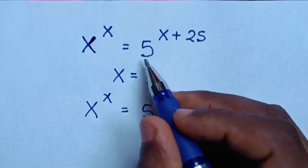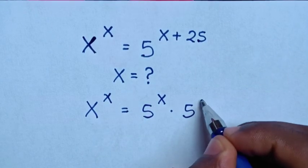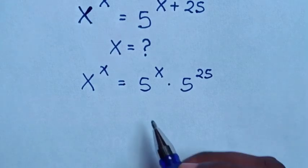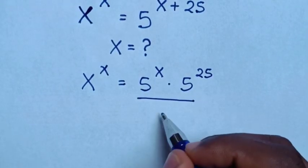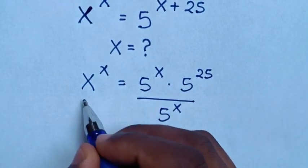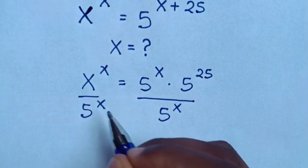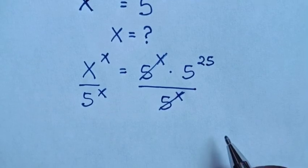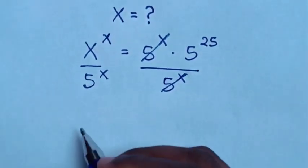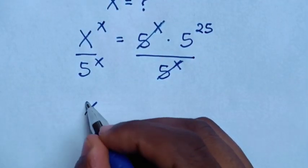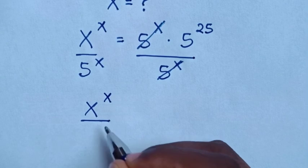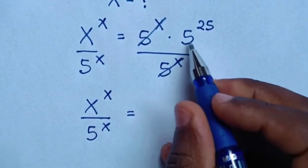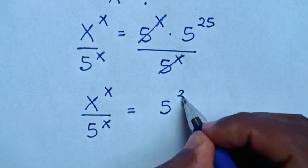Times 5 power of 25. Then in the next step we'll divide by 5 power of x on both sides. So this 5 power of x will cancel this 5 power of x, then it will be x power of x over 5 power of x is equal to 5 power of 25.